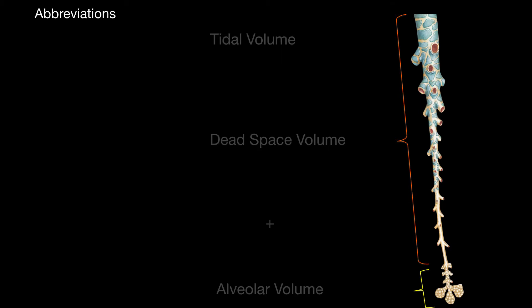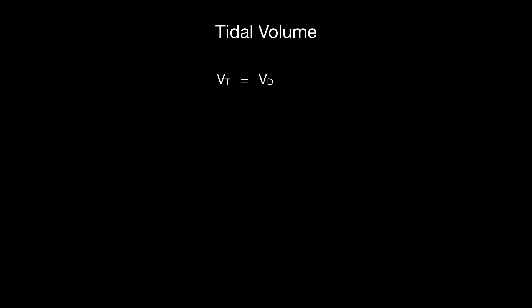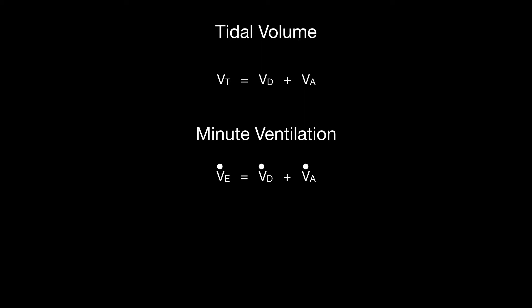Let me go over a few abbreviations. Tidal volume is equal to VT, dead space volume is equal to VD, and alveolar volume is equal to VA. Tidal volume equals dead space volume plus alveolar volume. Minute ventilation, abbreviated VE with a dot over it, equals dead space ventilation plus alveolar ventilation. The dots indicate that respiratory rate is multiplied times the volume.